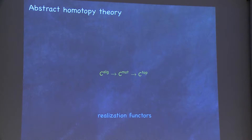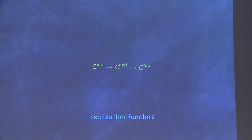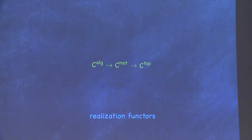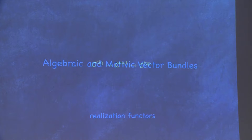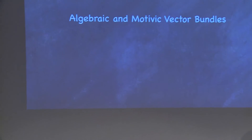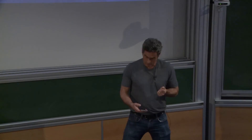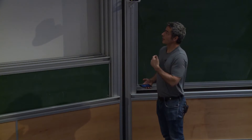There are realization functors. The motivic equivalences contain the algebraic equivalences, so for formal reasons there's a functor from algebraic to motivic homotopy theory. Over the complex numbers, since the affine line is contractible in topology, there's also a realization functor to topology — it sends a variety to the underlying analytic variety. That's the basic setup of abstract homotopy theory. The question was: can we study vector bundles using abstract homotopy theory?